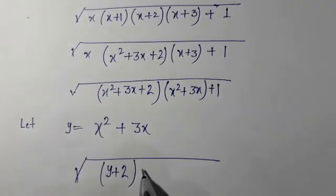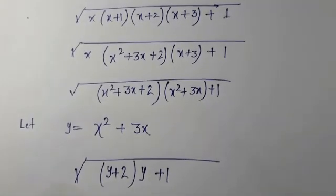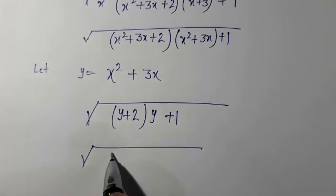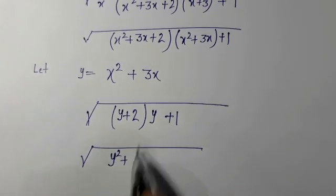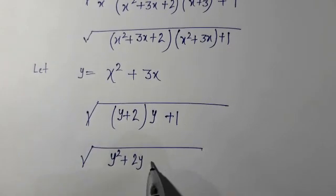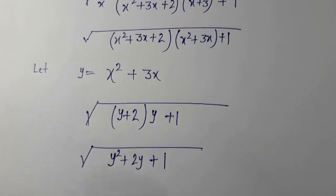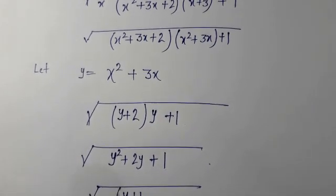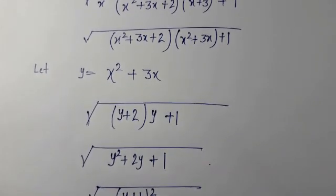So it will be √(y²+2y+1), which is √((y+1)²). This square and this root will cancel, and we have y+1.